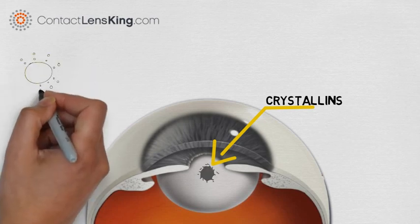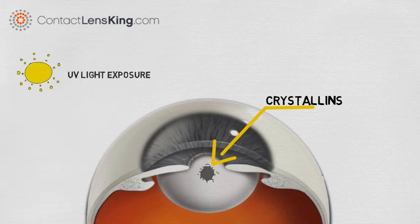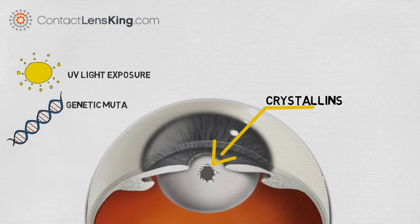For example, UV light exposure oxidizes proteins, changing their structure and causing a clouding effect. Genetic mutations can also create these clumps, resulting in cataracts.